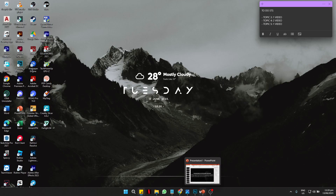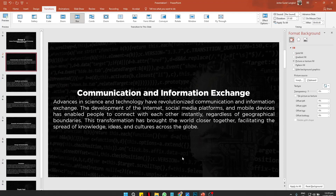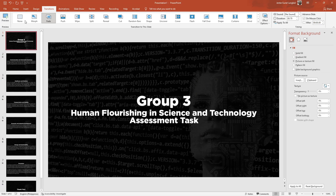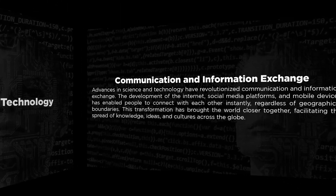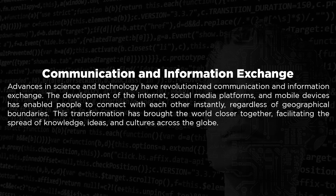Our creative way is by using a PowerPoint presentation. Short discussion lang. So let's start. Group 3, Human Flourishing and Science Technology Assessment Task. So, there are 5 ways by which society is transformed.